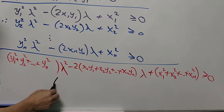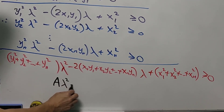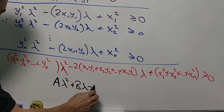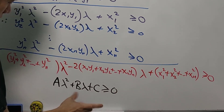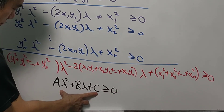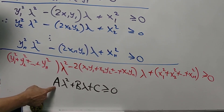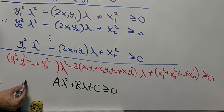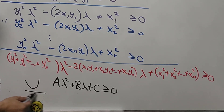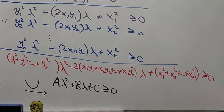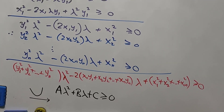In fact, the sum is just aλ² + bλ + c ≥ 0. We know that a quadratic expression with a positive leading coefficient has a curve that opens upward. If it is always non-negative, it means it doesn't touch the x-axis, so the discriminant must be less than or equal to zero.